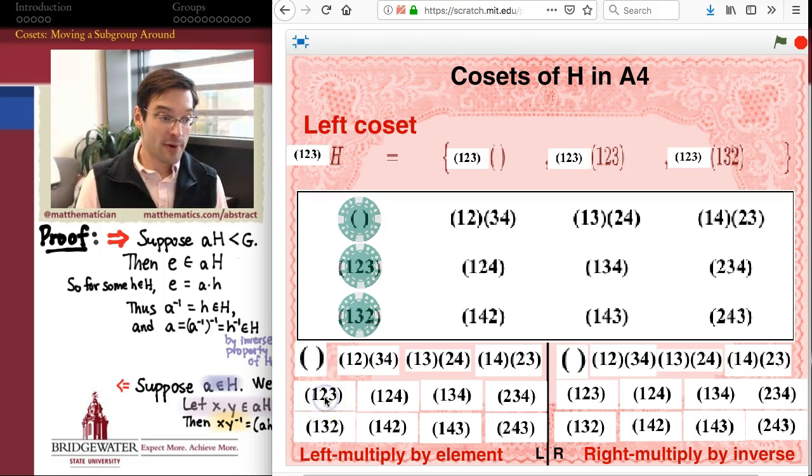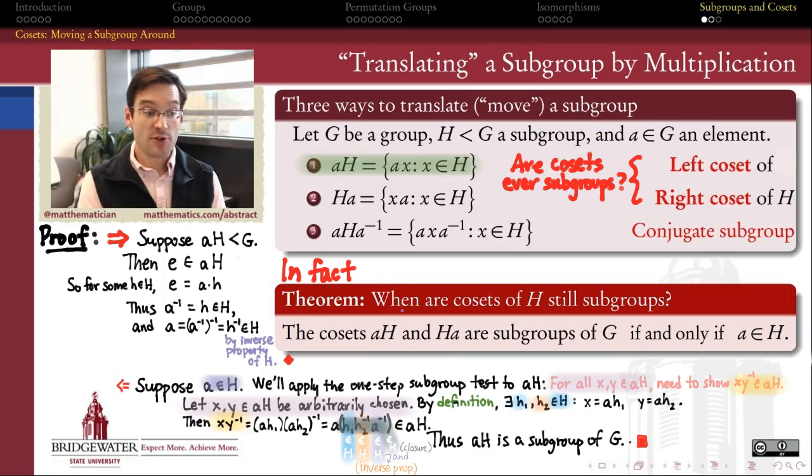The same thing is true when I left act by (1,2,3), still the same subgroup as I had originally. It's a left coset, but it happens to be a subgroup, namely, the same as the subgroup H itself. So, is that true in general?